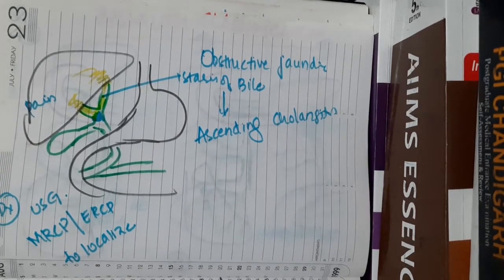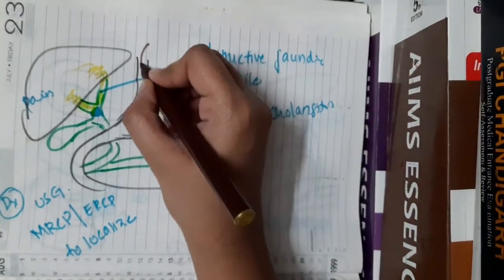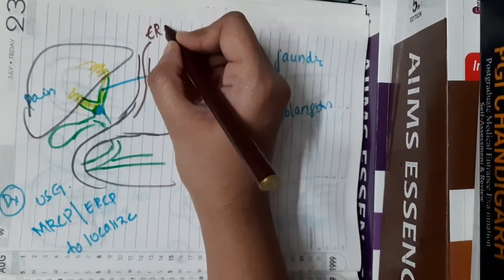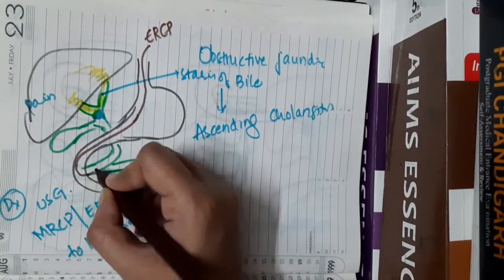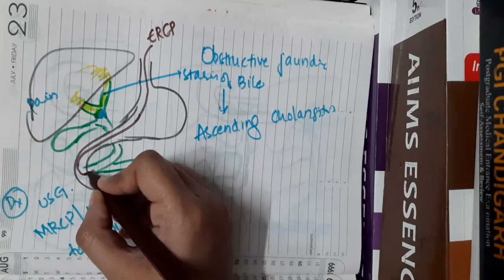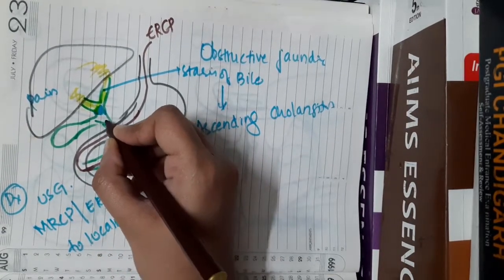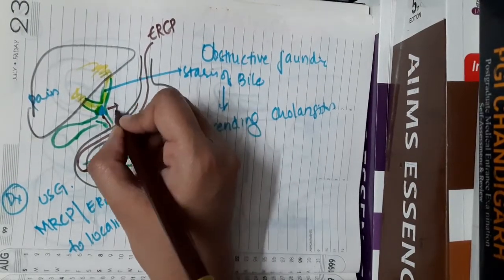Now, how are you going to treat it? Once you have localized the stricture, you can enter through endoscopic retrograde cholangiopancreatography, then enter the pancreatic biliary duct and from there enter the common bile duct. Here you will enter the site where the stricture is present and you will do stenting at that site with the help of the endoscope.